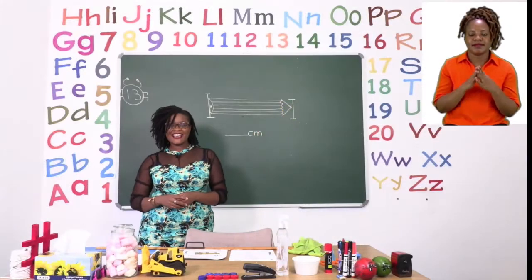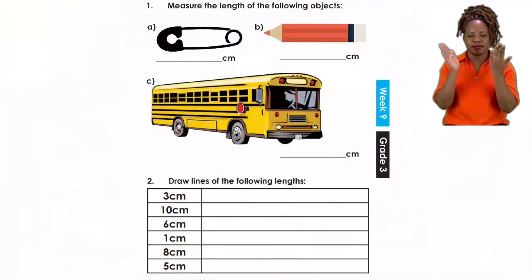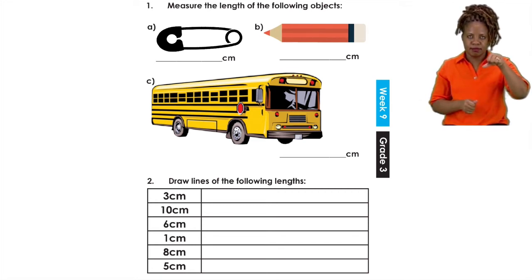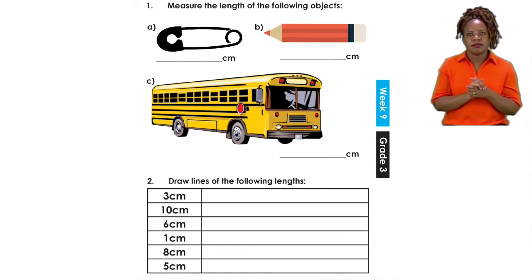For our last exercise today, please can you turn to page 13. On page 13 we are going to be doing measurement. Now, remember, measurement is all about the length. And this time, instead of just measuring with anything, we are going to be using our rulers.